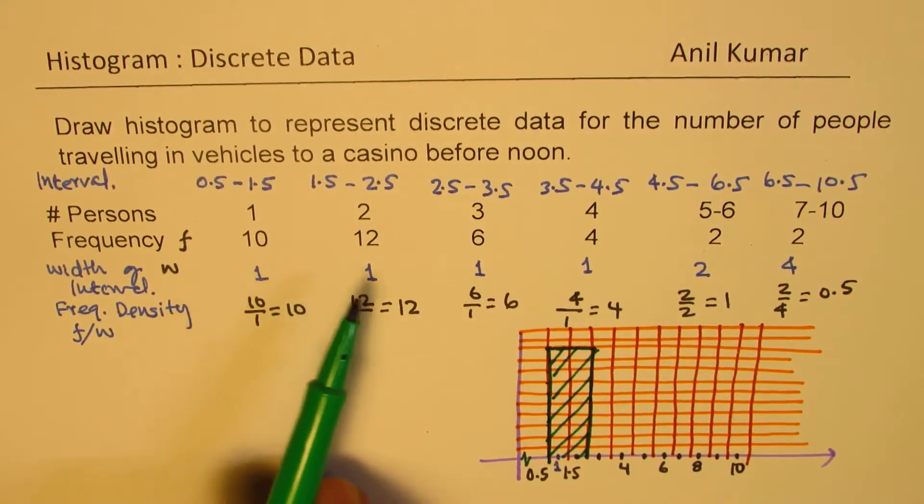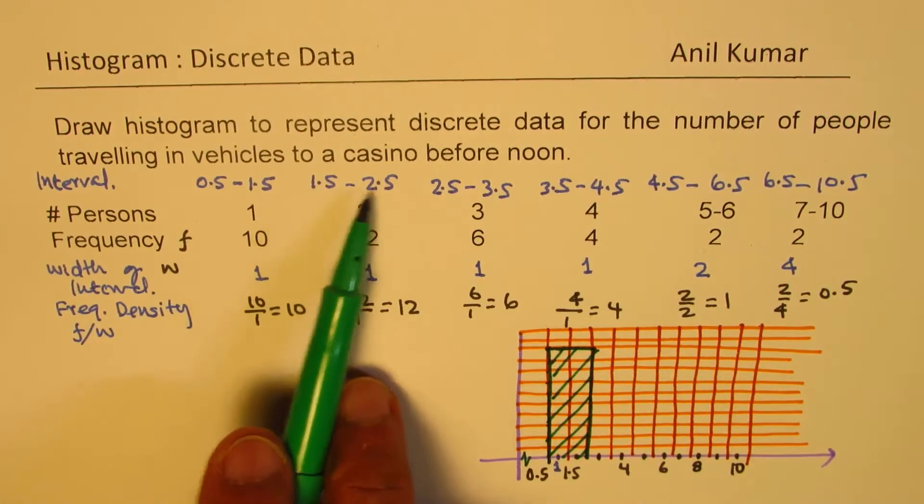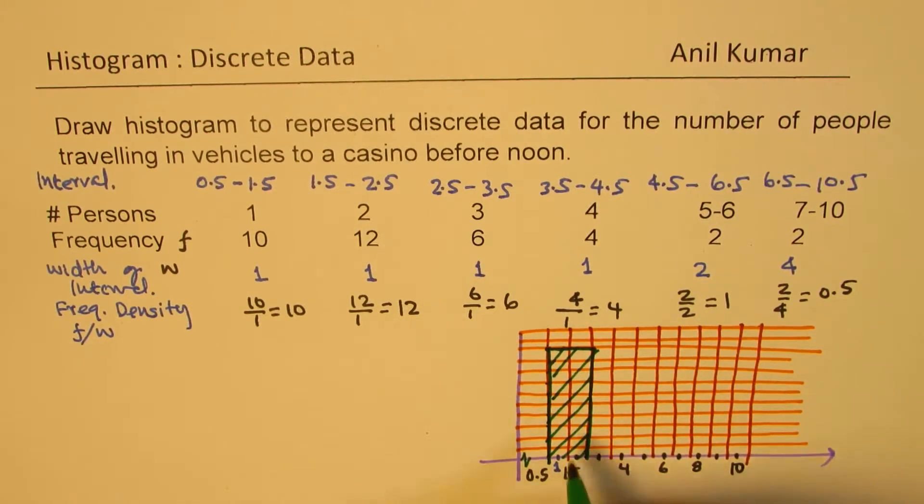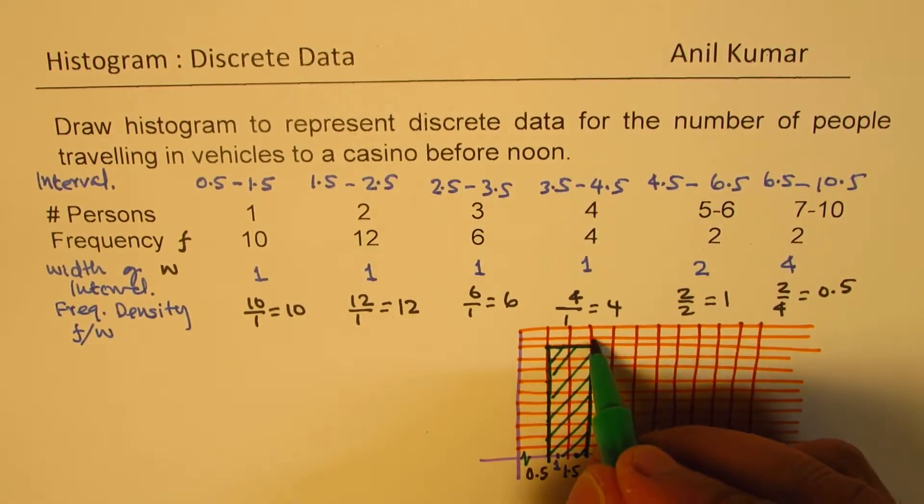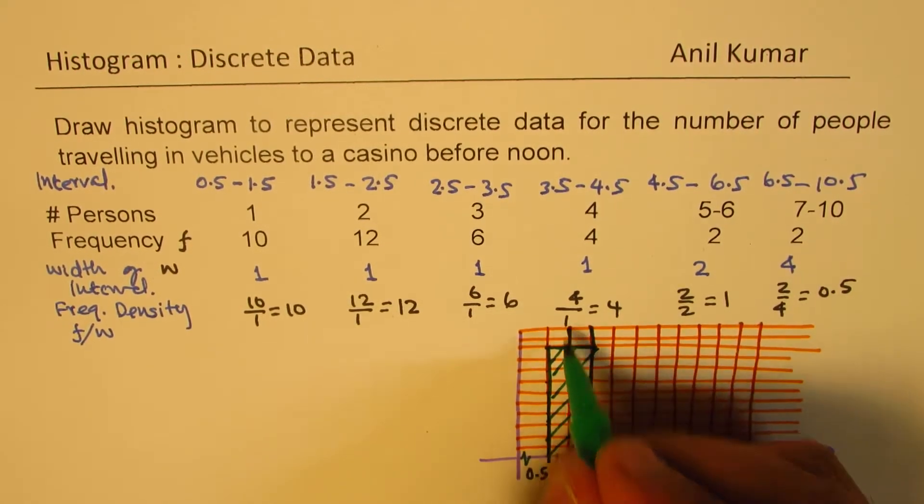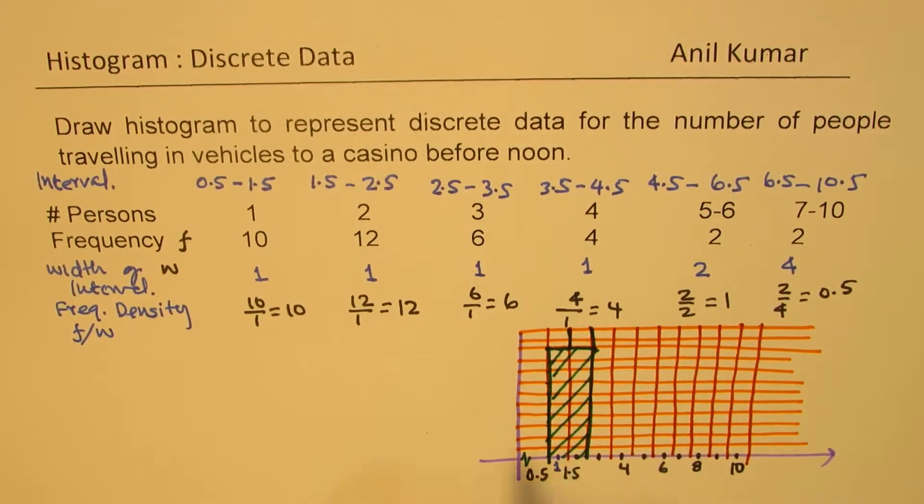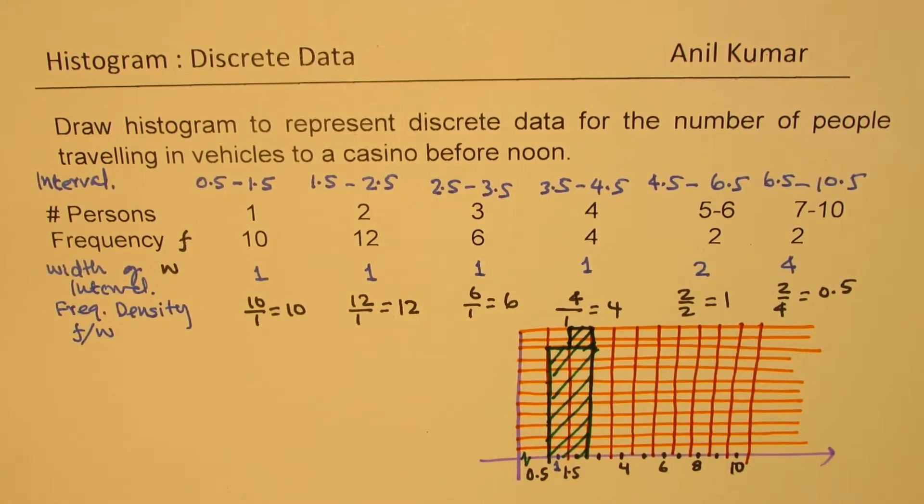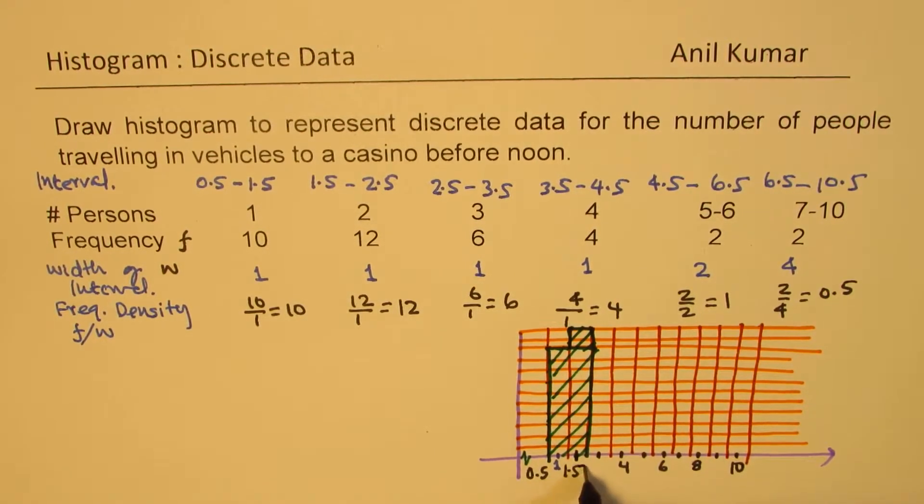Perfect. Then, the next one here is from 1.5 to 2.5, which represents 2 persons and the density is 12. So 1.5 to 2.5, which represents this 2 persons. Sorry, so the first one was here. This is the second one. So 1.5 to 2.5. This is the second one, so it goes to 12. You get the idea? So that is 2 for us. This is 3 for us. So this is 2 for us.